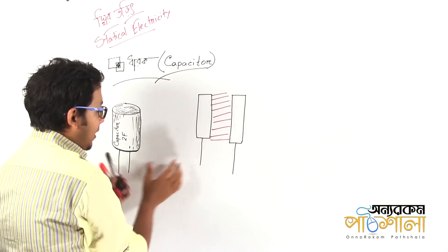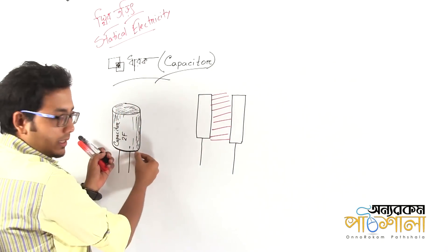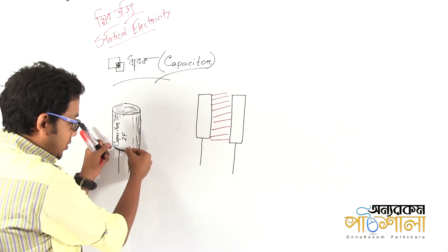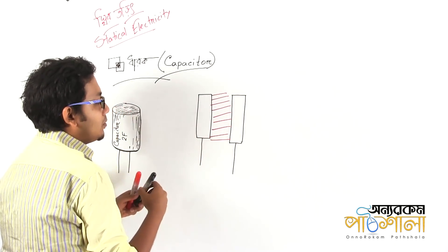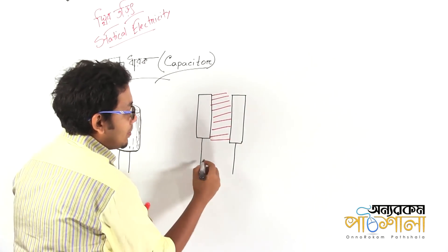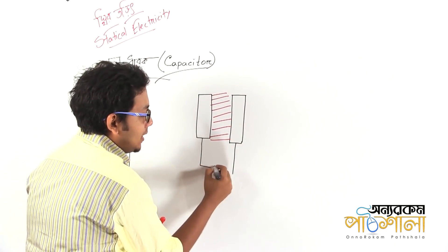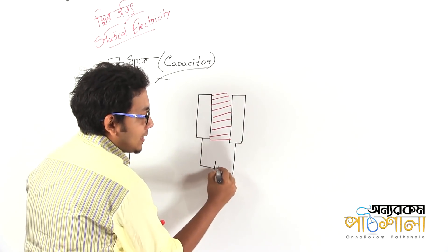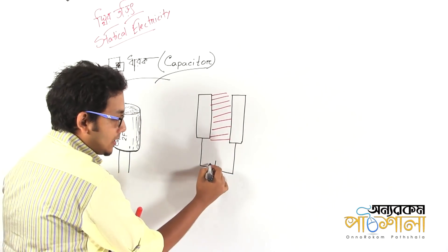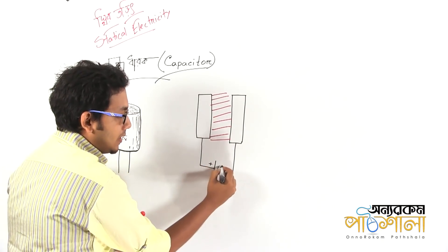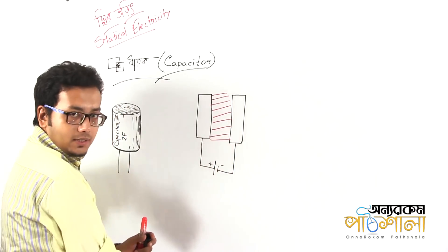If you look at this terminal, we need to put the battery in the middle of this terminal. We know that the battery has a positive end and a negative end.